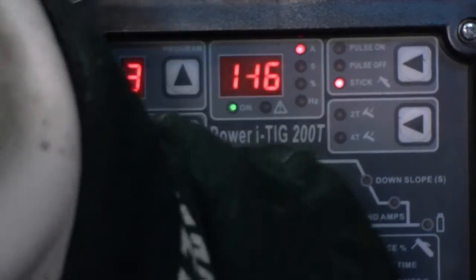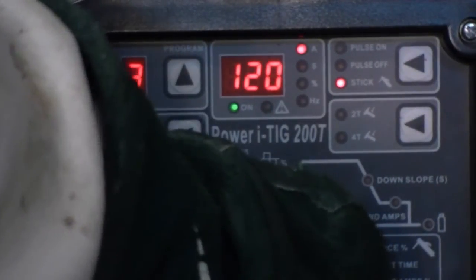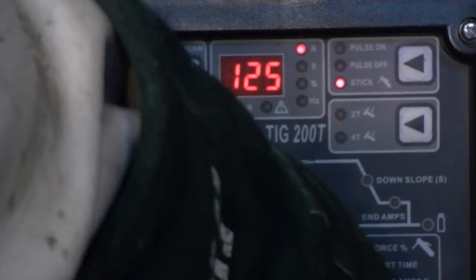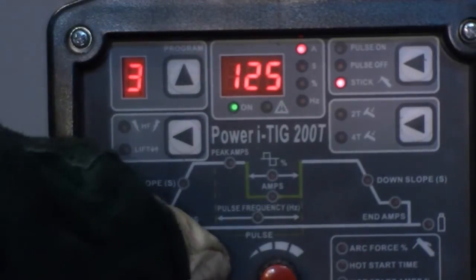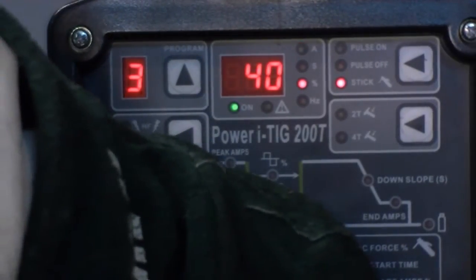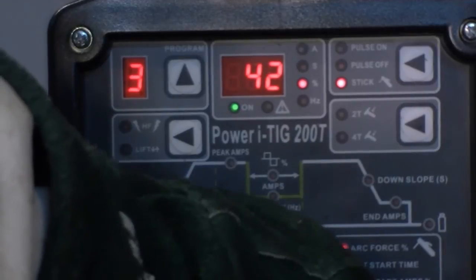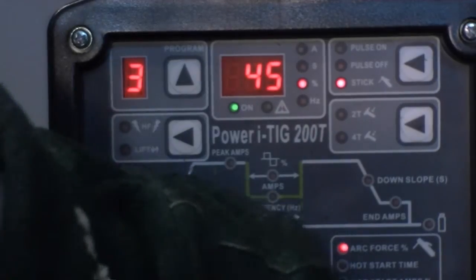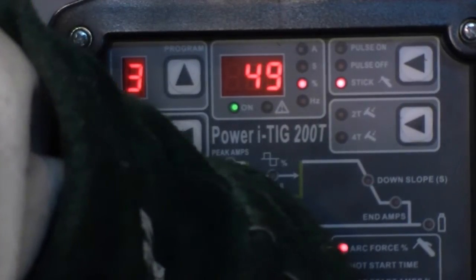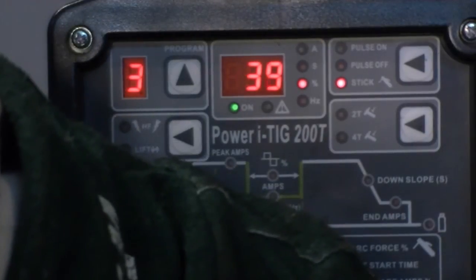Now I'm setting the machine up for 7018. I'm going to be using a 1/8 inch rod. I'm starting on the lower third of the recommended range of amperage, and I'm lowering the arc force control but increasing hot start time and intensity to increase the startability of the rod.